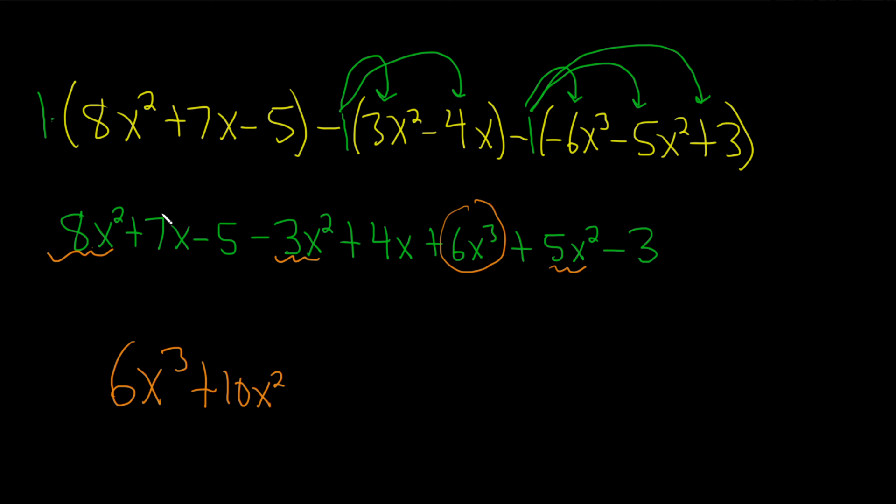What about x terms? We have 7x plus 4x is 11x. And the last thing is just the numbers, negative 5 minus 3 is minus 8.